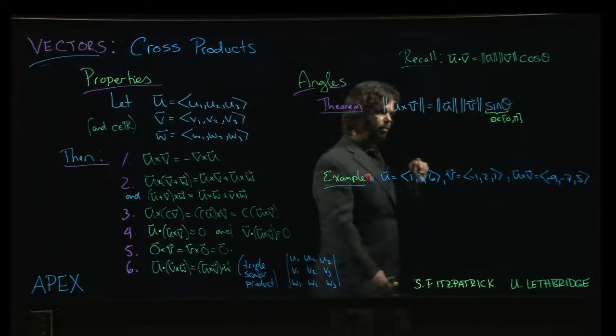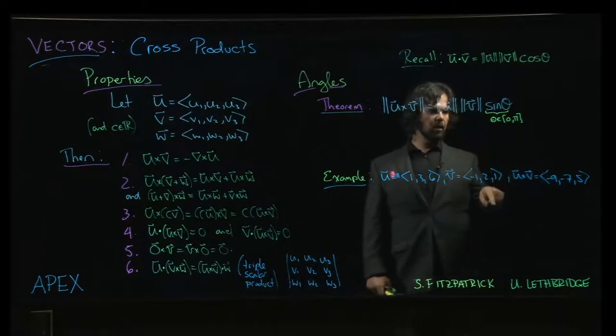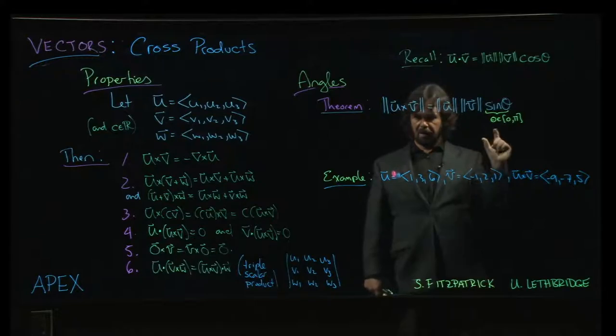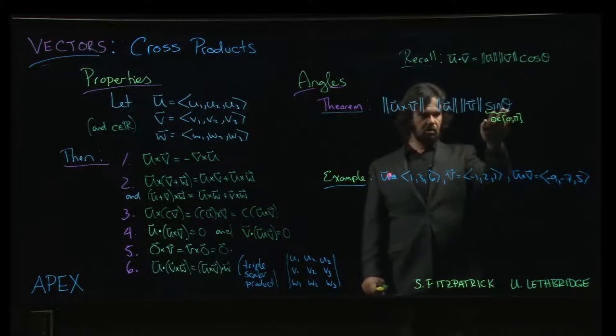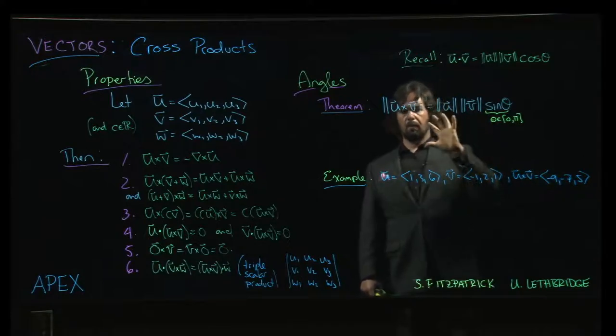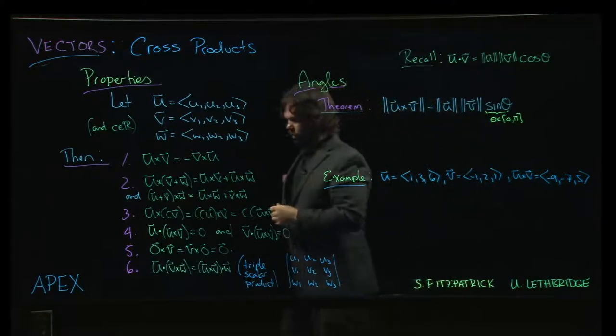That sine theta will always be positive or possibly zero. And we also see that where is it zero? At zero and at pi, there we see again that parallel property. If the vectors are parallel, so if they point in either the same direction, so theta is zero or opposite directions, so theta is pi, the cross product is going to be zero.